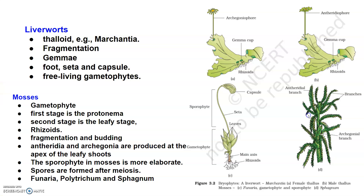Bryophytes are further classified into two categories: liverworts and mosses. Liverworts are generally found in moist shady areas on the banks of streams — for example, Marchantia. The thallus is dorso-ventrally flattened and closely pressed to the substratum with the help of rhizoids. The leafy members have tiny leaf-like appendages on a rose or stem-like structure. Asexual reproduction in liverworts takes place by fragmentation through their thalli and by the formation of special structures called gemmae cups, which are green multicellular asexual buds that develop in small receptacles on the thalli. These gemmae become detached from the parent body and germinate to form new individuals.